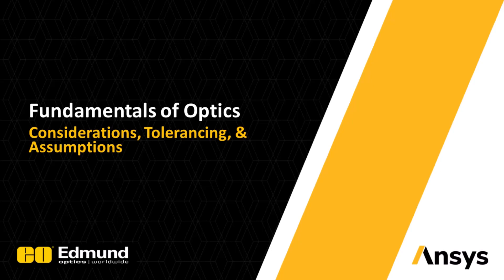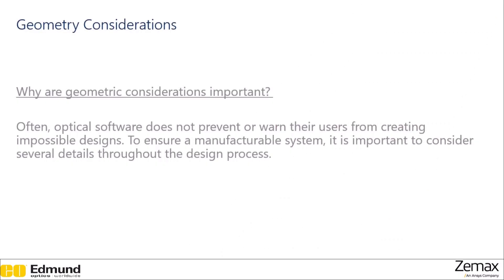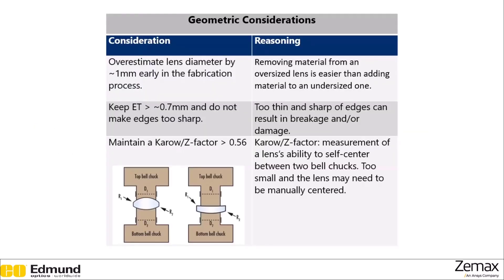Welcome. In this section we're going to go over some geometric considerations, tolerancing, and assembly of optical systems. Starting with geometric considerations, optical software often does not prevent or warn you when you're making a design that is not realistically manufacturable. So to ensure a manufacturable system, it's important to consider several details throughout the design process.